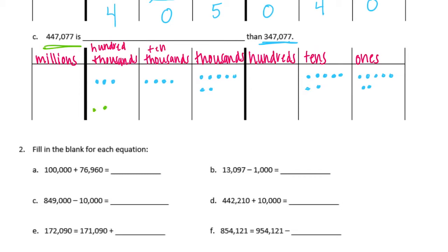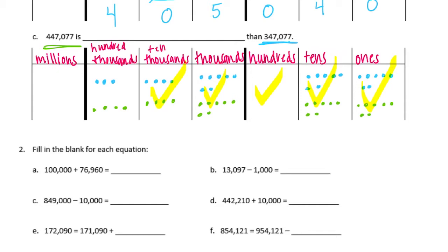So 4 in the hundred-thousands, 4 in the ten-thousands, 7 in the thousands, nothing in the hundreds, 7 in the tens, and 7 in the ones. Here we can see that the ones, tens, hundreds, thousands, and ten-thousands places are all equal. The only difference is this one has one extra hundred-thousand. So we can say that 447,077 is 100,000 greater than 347,077.